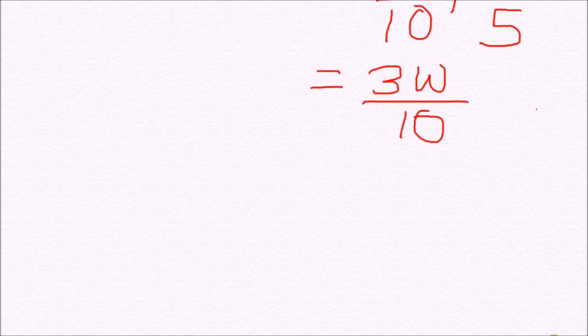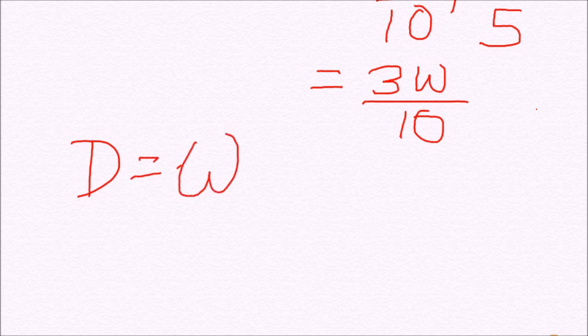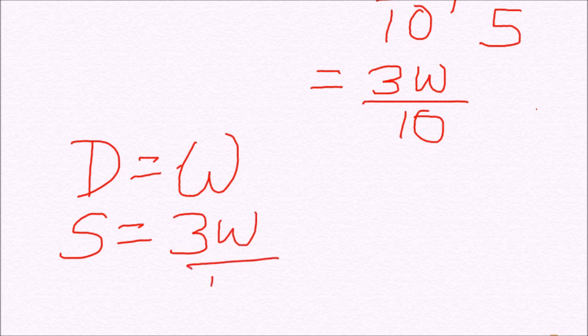As we know the total time or the distance is same that is W and the new speed is 3 times W by 10. Now we can easily find the time taken by A and B together by the formula distance is equal to speed into time.